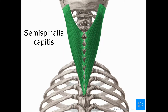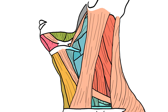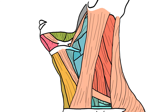Remember four S's. The first one is the semispinalis capitis. The second S is for splenius capitis. The third one is for levator scapulae — I took the S from the scapulae — and the last one is the scalene medius, or the middle scalene muscle.